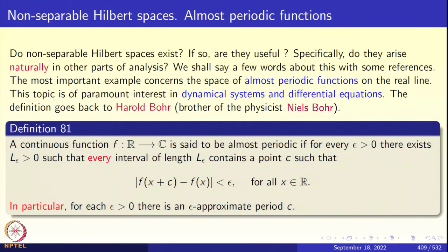The definition goes back to Harald Bohr, who is the brother of the physicist Niels Bohr. A continuous function f from the real line to the complex plane is said to be almost periodic if for every epsilon greater than 0 there is a positive number L_epsilon such that every interval of length L_epsilon contains a point c such that mod f(x+c) minus f(x) is less than epsilon for all x in R.